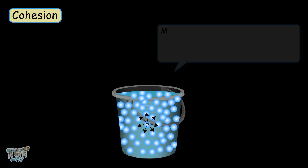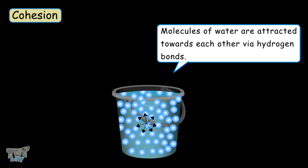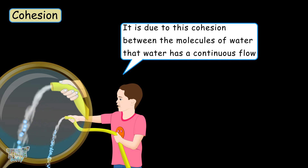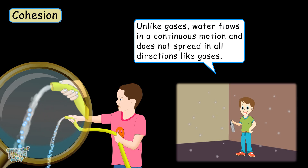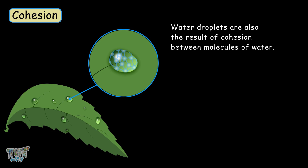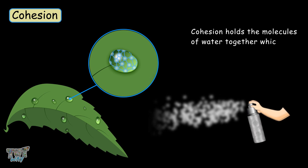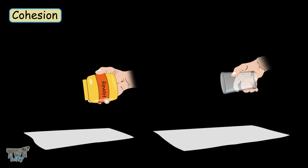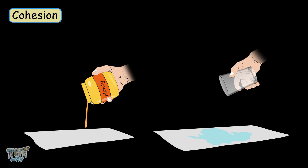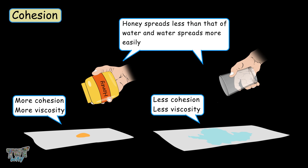For example, molecules of water are attracted towards each other via hydrogen bonding, and it is due to this cohesion between the molecules of water that water has a continuous flow. So unlike gases, water flows in a continuous motion and does not spread out in all directions. Water droplets are also the result of cohesion between the molecules of water. Cohesion holds the molecules of water together, which is not present in gases, which is why gases spread away. If you pour a little honey and water on paper, you will see that honey spreads less than water because there is greater cohesion between honey molecules, making it more viscous.